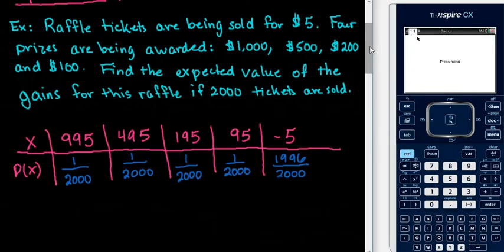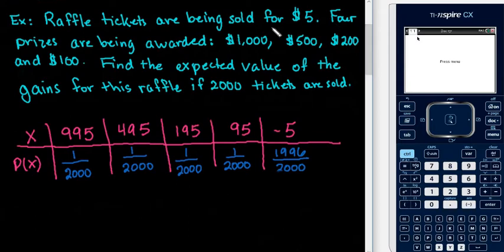For this problem, raffle tickets are being sold for $5 each. Four prizes are being awarded. They are in the amounts $1,500, $200, and $100. We are going to find the expected value of the gains for this raffle if 2,000 tickets are being sold.